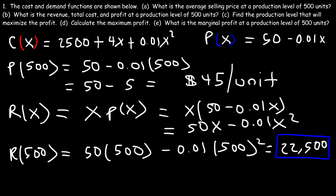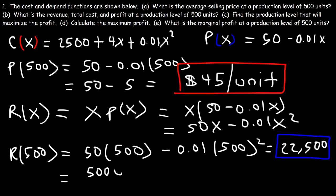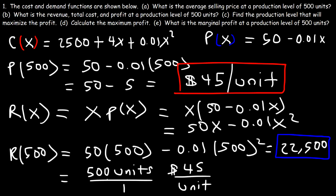To understand what $22,500 represents: the average price at 500 units is $45 per unit, and we're selling 500 units, so 500 units times $45 per unit — the units cancel — giving a total revenue of $22,500. That's how much money the company is receiving for selling 500 units of this product.